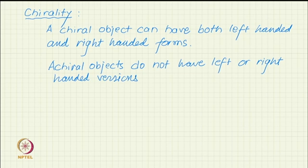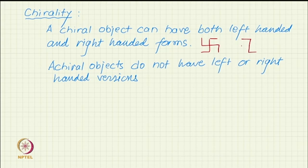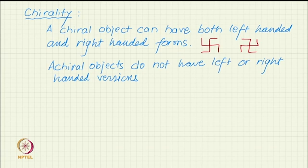For a 2-dimensional example, consider the swastika — our popular swastika. You can draw it one way or the other, and there is no way by rotation in-plane that you can superimpose one on the other. Although both look very similar, one can be called left-handed — that is your choice.